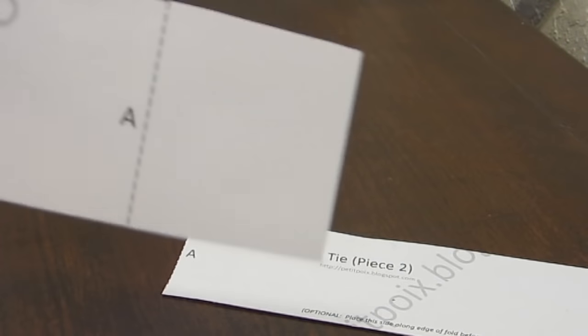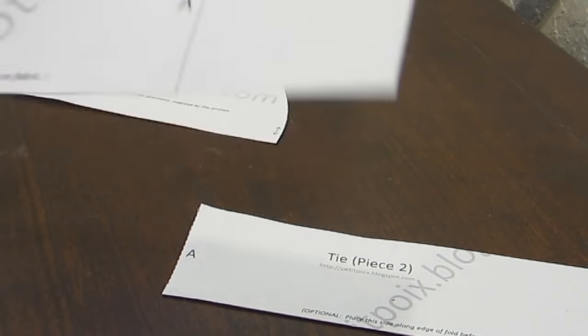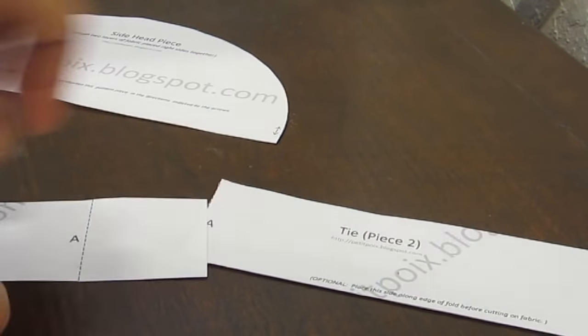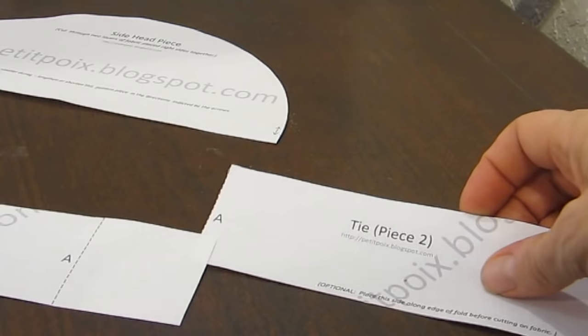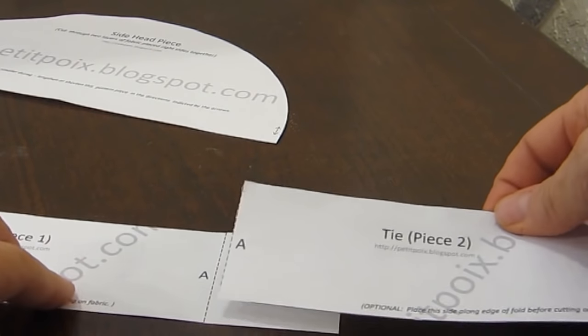When you're cutting them out, you need to leave past the dotted line, leave a piece of paper, and then tape them together like this. This one I've cut off the paper next to the dotted line.